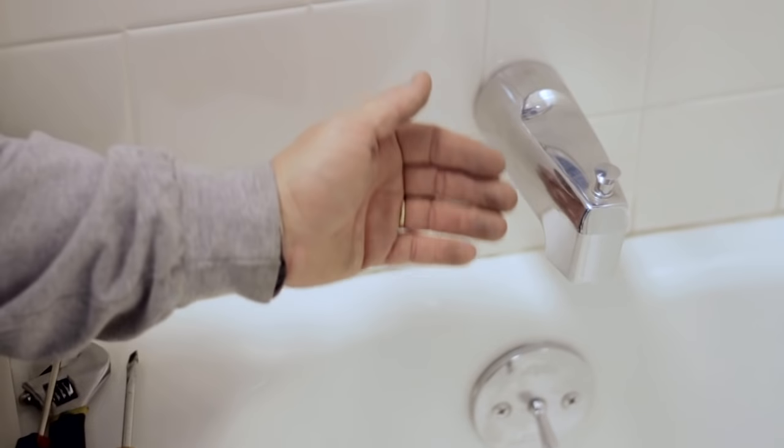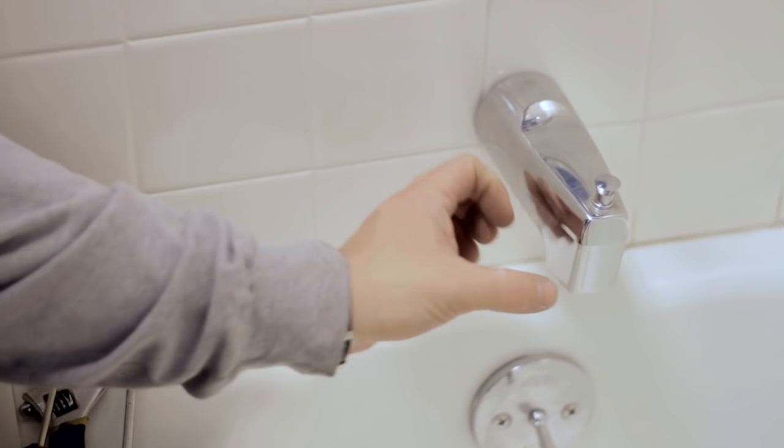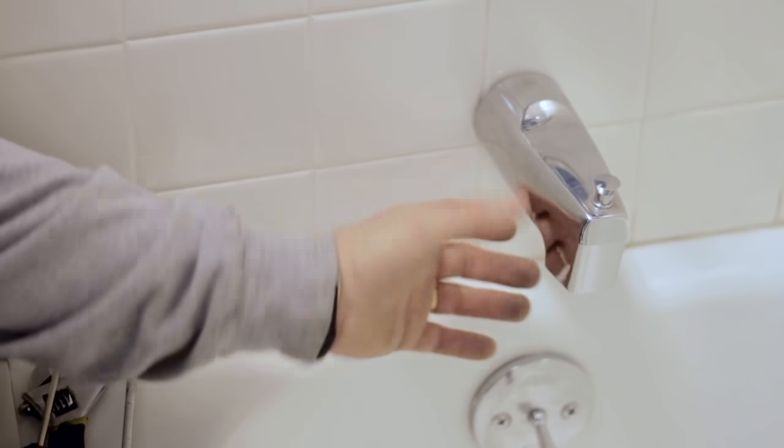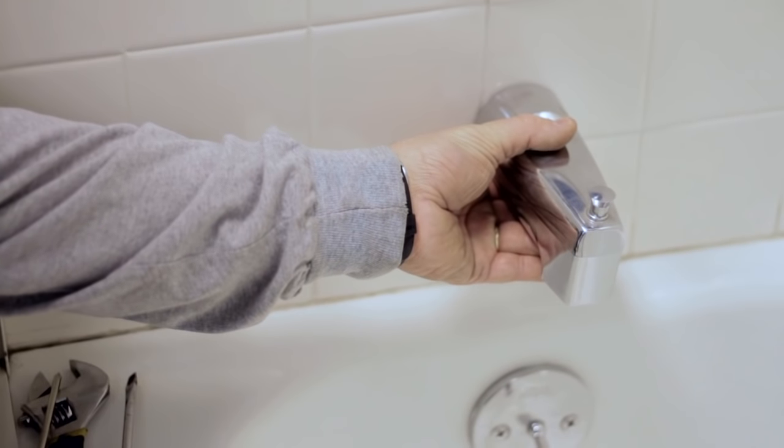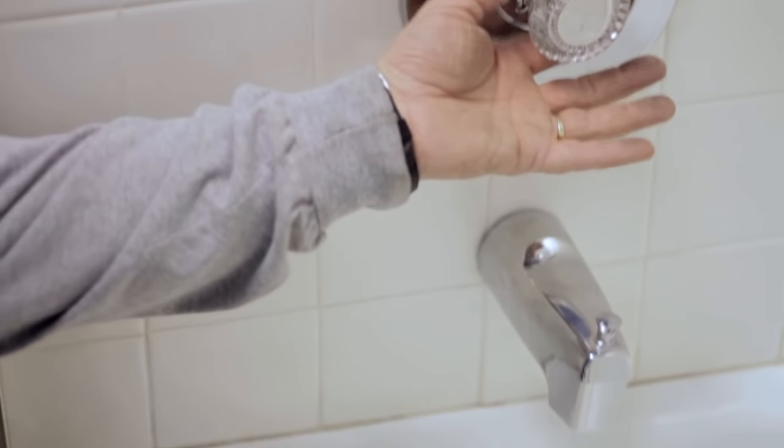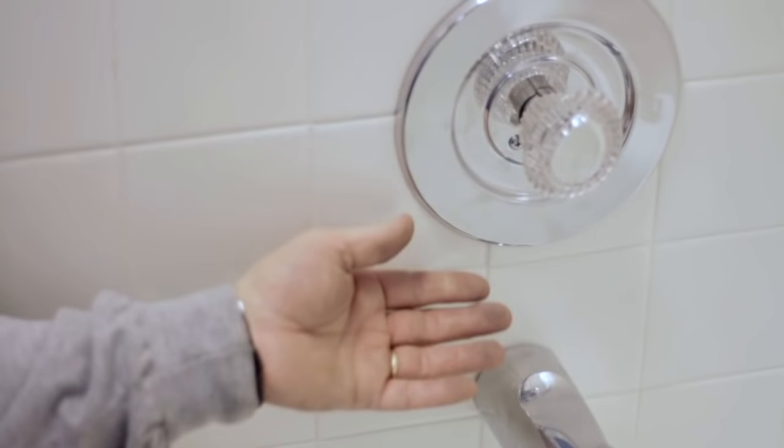Today we're going to show you how to fix water that keeps running in a tub faucet. When you have a tub faucet that's leaking, usually water leaks out of the tub spout here. It's not actually the tub spout that's the culprit. The problem is up in the faucet itself.